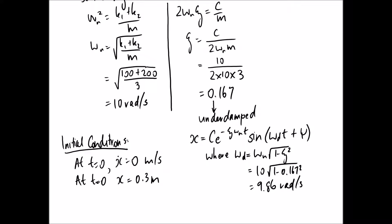So now it's just a case of actually solving for c and psi. And we have our initial conditions, which are exactly the same as what we had before. We know it's released from rest, so at time equals 0, our velocity x dot has to equal 0. And we know it's released 0.3 meters to the right. So again, at t equals 0, x has to equal 0.3 meters. So let's start with the one for x again, because that one's a little bit easier.